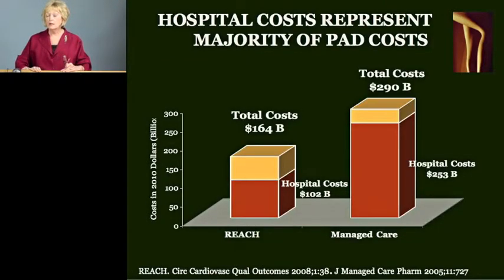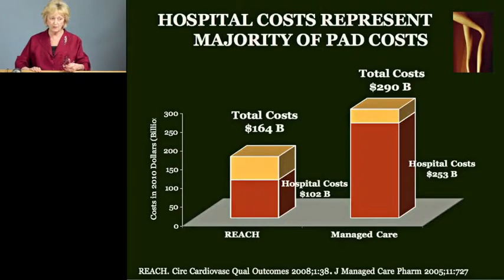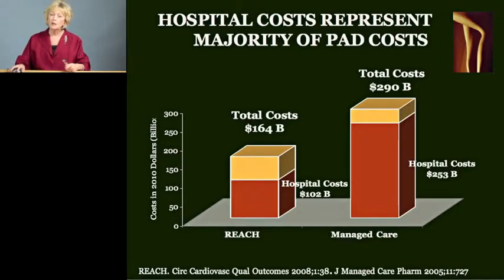It turns out that hospital costs represent the majority — between 62 and 87 percent of PAD costs — or in the REACH registry, $102 billion, and in the managed care study, $253 billion. Two other studies of Medicare have also found that almost 90 percent of the costs are hospital costs. By way of comparison, in the U.S., total hospital costs represent only about 31 percent of health care expenditures.